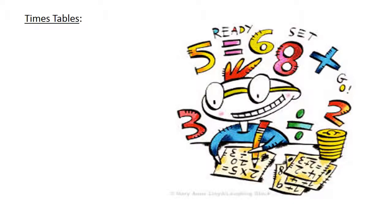Times tables. Eleven times eight equals eighty-eight. Eight times seven equals fifty-six.